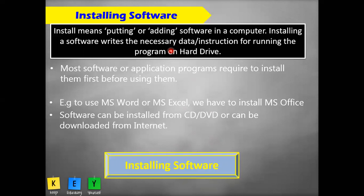Installing a software is compulsory before using it. For example, if you want to write a document, do an assignment, make a presentation, or create a spreadsheet, then MS Office needs to be installed. If you want to listen to songs or watch a video, media players like VLC or Windows Media Player need to be installed. If you need software to detect and remove viruses, then you have to install an antivirus program. So according to your need, you must install an application software before using it.